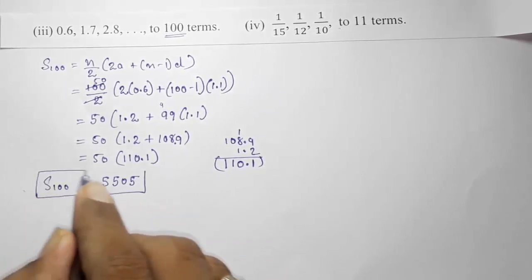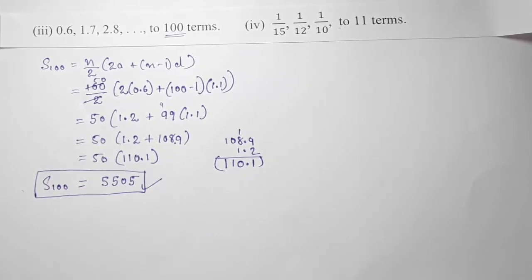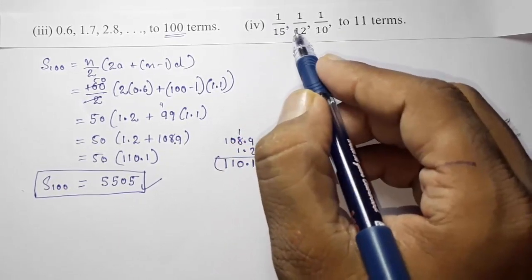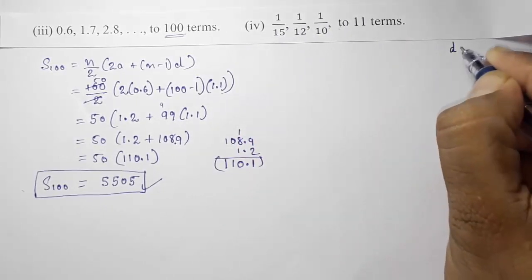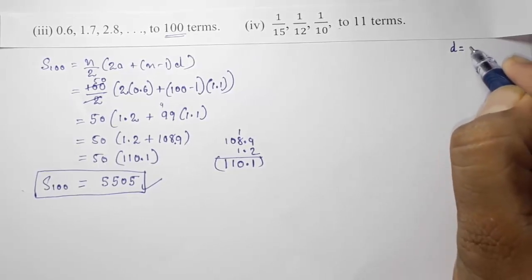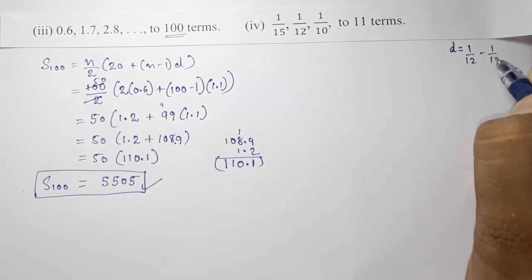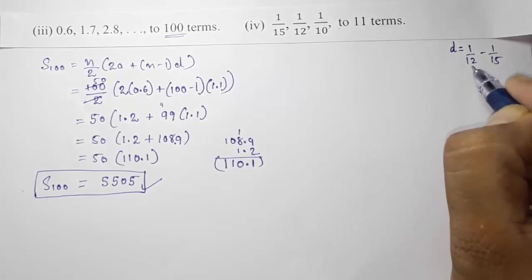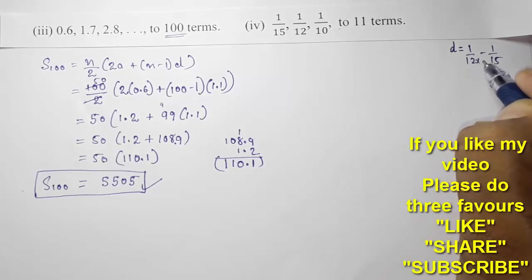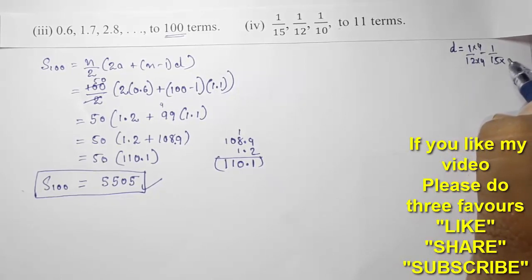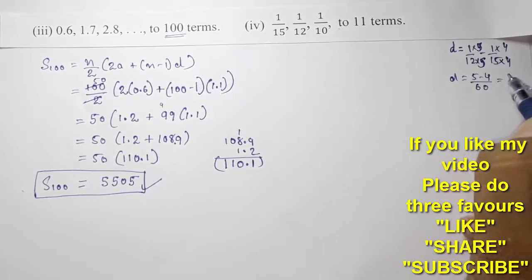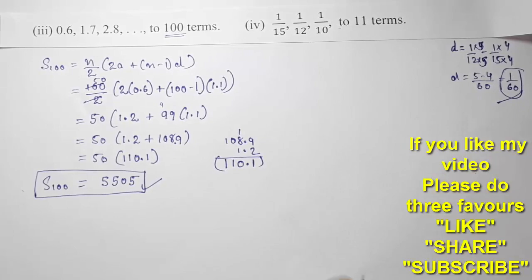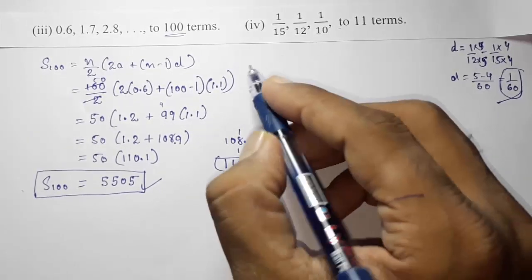Moving to the last question, which has fractions. First find the common difference: d = a2 − a1 = 1/12 − 1/15. The LCM of 12 and 15 is 60. So d = 5/60 − 4/60 = 1/60.